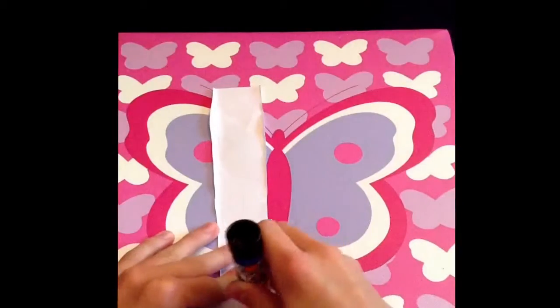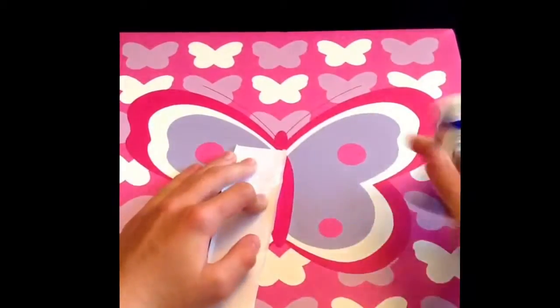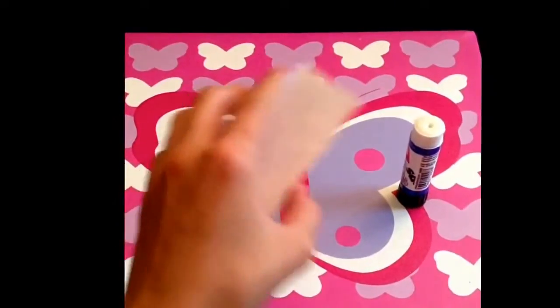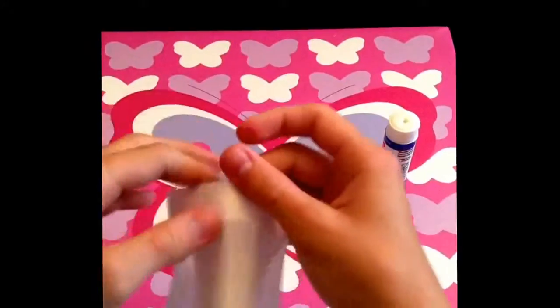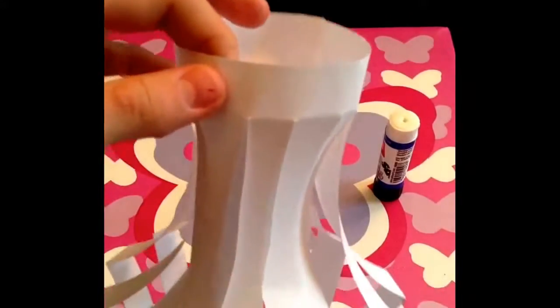Take one strip and glue either side of the strip. This is what you are going to be using as a handle for the lantern. So you are going to take your lantern and you are going to glue one side on here and then the other side opposite it. This will be used as a handle. You will see what it will look like when I get it glued on.